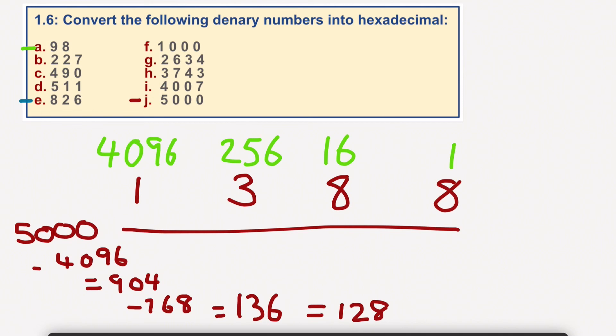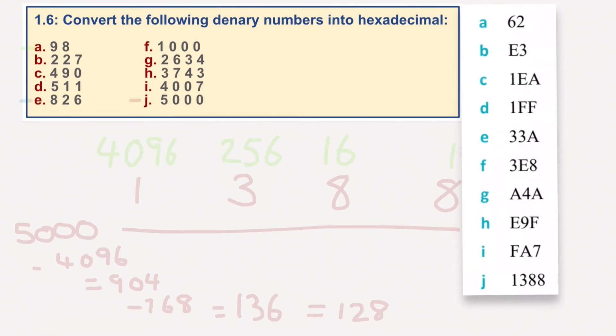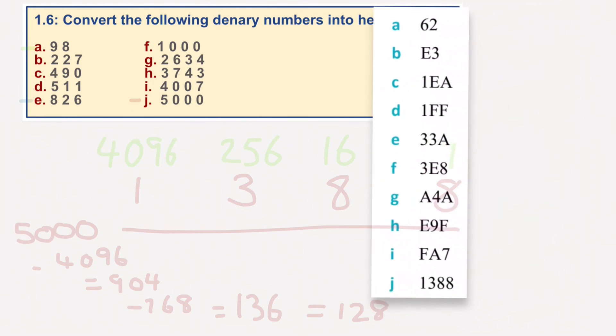Okay, I'm going to load up the answers. As you can see, we were correct. 1388, and we've got 62, E3, 1EA, 1FF, 33A, 3EA, A4A, E9F, FA7, 1388.